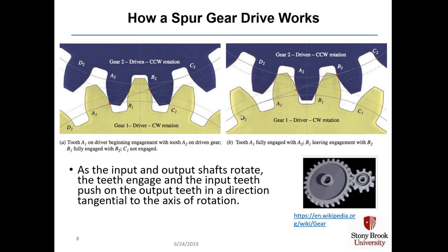Let's look at how a spur gear drive works. In both pictures, gear one — the yellow one — is going clockwise, which means gear two is going counterclockwise. As gear one rotates, each of its teeth engages a pair of teeth of gear two, where gear one is the driver gear. In this example, tooth B1 on gear one is between teeth A2 and B2 of gear two, and driven tooth A2 is now fully engaged between driver teeth A1 and B1.